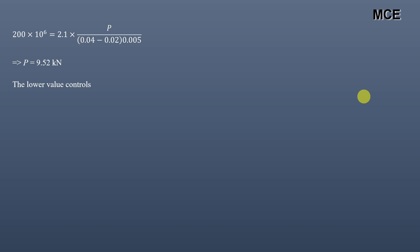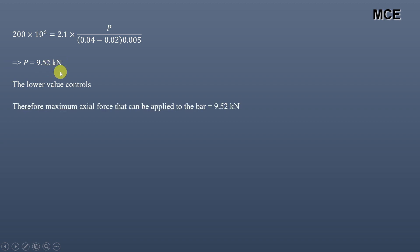As mentioned earlier, the lower value governs the design. The lower value is from the second case — failure at the hole — which gives P = 9.52 kN. Therefore, the maximum axial force that can be applied to this bar without causing failure is 9.52 kN. This is how you find the stress concentration factor for an axially loaded bar that has both a hole portion and a fillet portion.